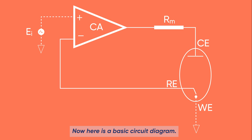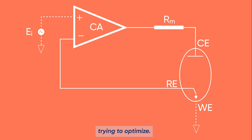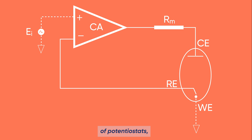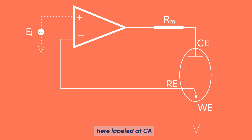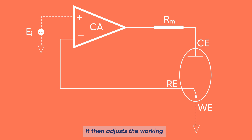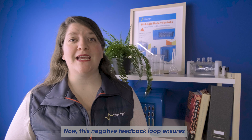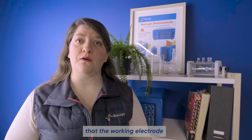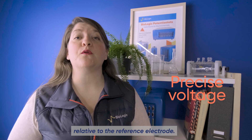Here is a basic circuit diagram. Keep in mind that this setup can vary depending on what you're trying to optimize, and that's why at Biologic we offer two different ranges of potentiostats to cover different needs. A potentiostat circuit uses a control amplifier — here labeled CA — to compare the working electrode's voltage with that of the reference electrode. It then adjusts the working electrode's potential via negative feedback until the voltage matches, ensuring that the working electrode maintains a precise voltage relative to the reference electrode.